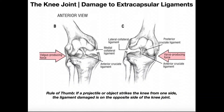Welcome back to Anatomy & Physiology on Catalyst University. My name is Kevin Togoff. In this video, I want to talk about forces that tend to damage either the MCL, the medial collateral ligament of the knee, or the LCL, the lateral collateral ligament of the knee. You're going to hear terms like a valgus-producing force or a varus-producing force. I want to talk about what those forces are, the difference between varus and valgus, and then what type of force damages what ligament and why.